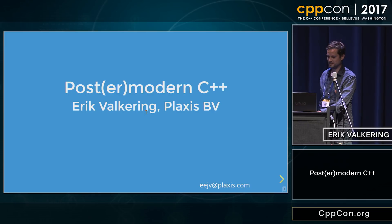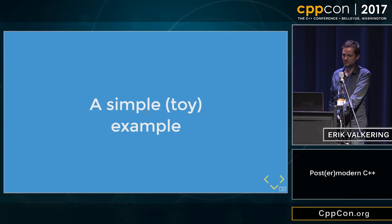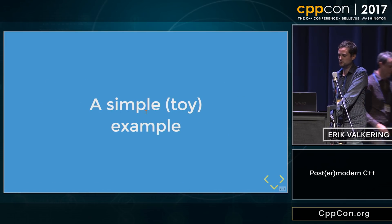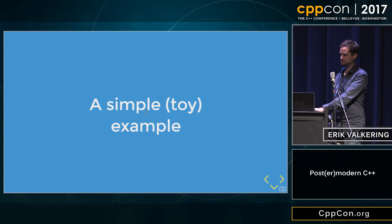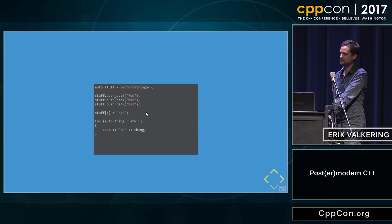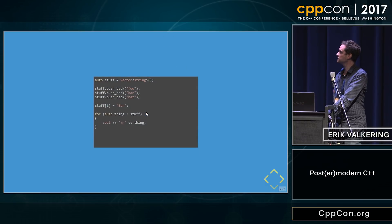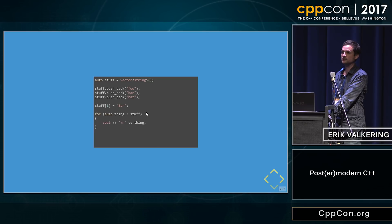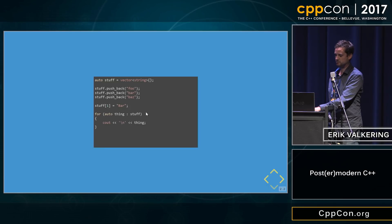I want to discuss a simple toy example. Let's say we have this piece of code. We have a vector of strings. We push back several values, we reassign a value, we iterate through it, and we print them. Very simple.